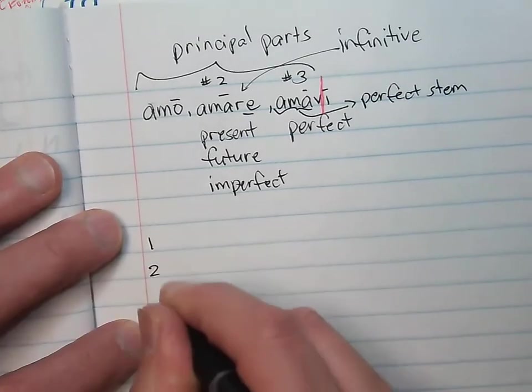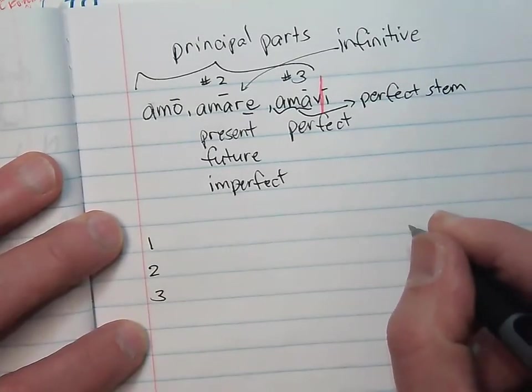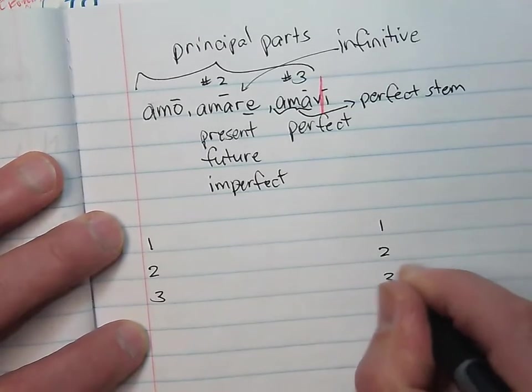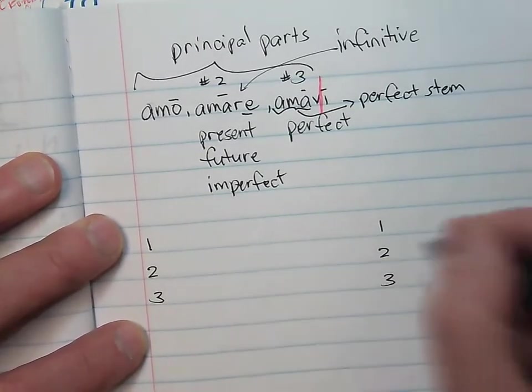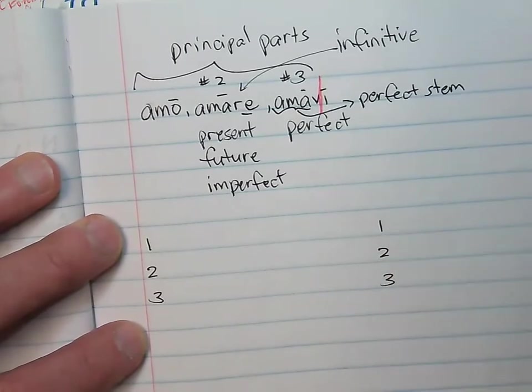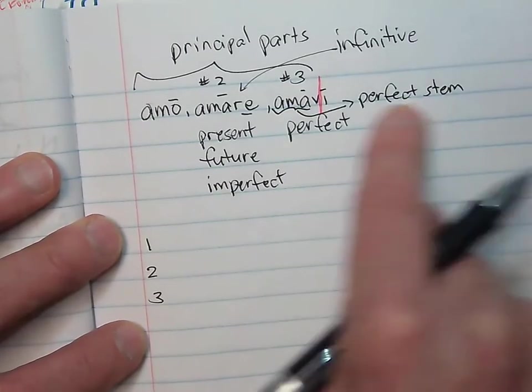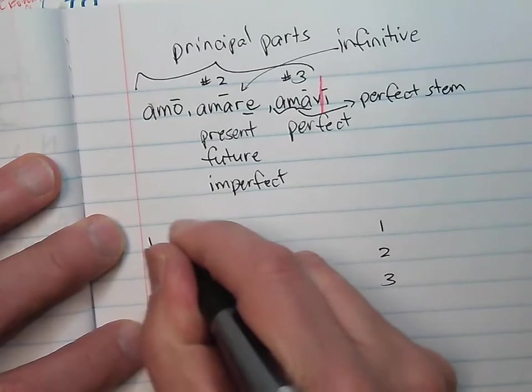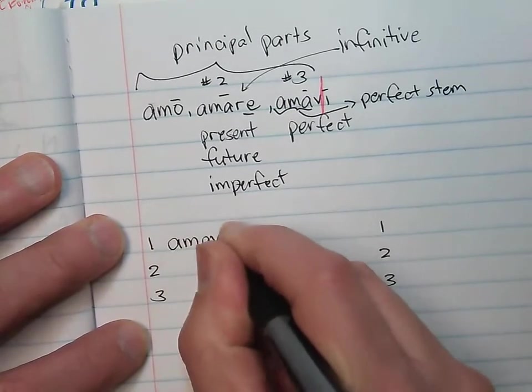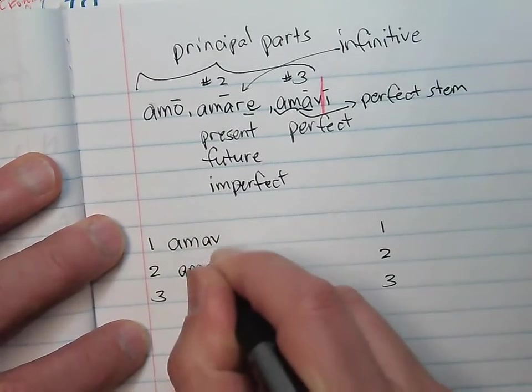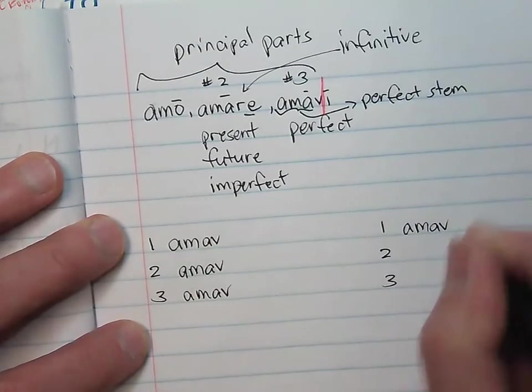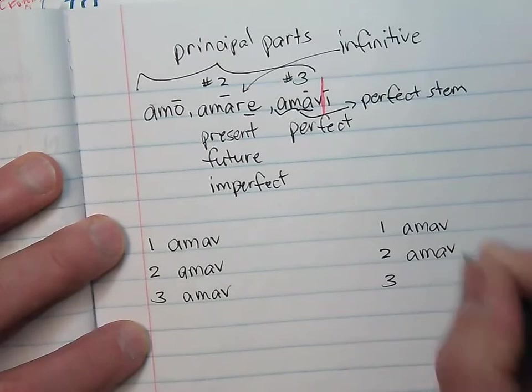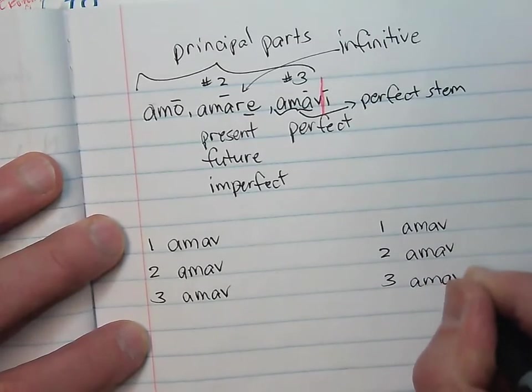Well, unus, duo, tres. I'm writing one, two, three twice. Unus, duo, tres. Now, take your perfect stem right here and write it down six times. Amav, amav, amav, and amav.